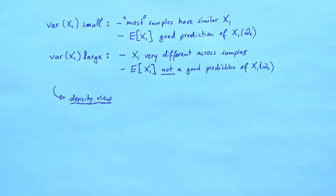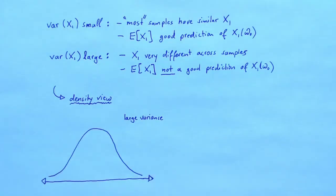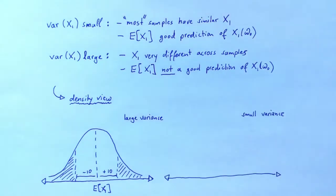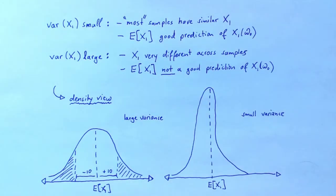We can use densities to illustrate the difference between a small and a large variance. Let's start by looking at a random variable x1 with a large variance. As you can see, the distribution of x1 is fairly spread out. The expectation of x1 lies at the center of the distribution, but it is not a good representative of the rest of the distribution — we may end up far from the expectation with fairly large probability. Now let's look at a scenario where x1 has a small variance. The distribution is tightly centered around the expectation. We may end up far away from the expectation, but the probability of that happening is fairly small.